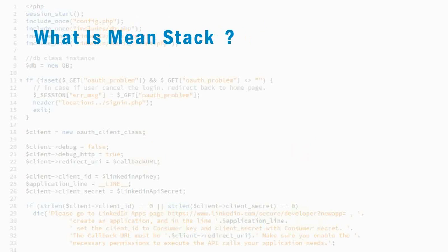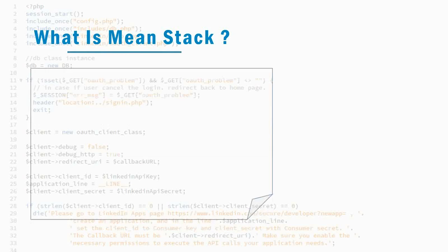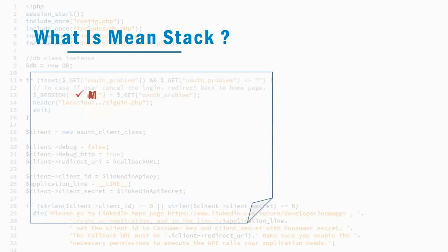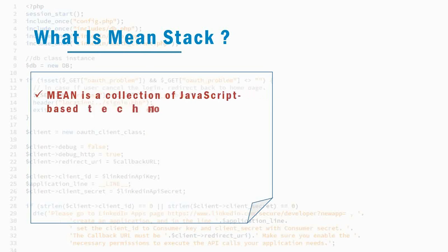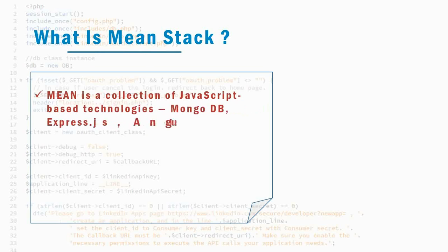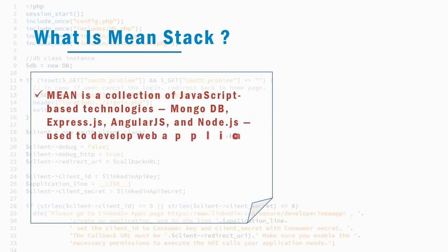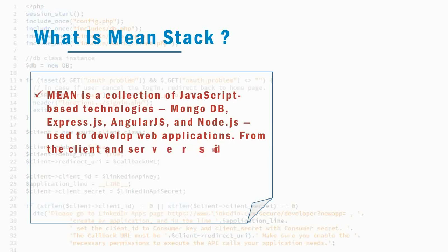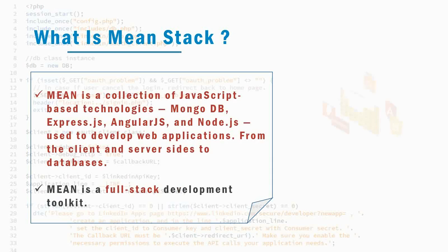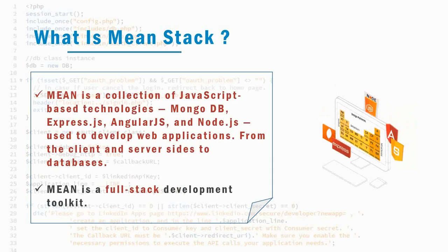What is MEAN stack actually? MEAN is a collection of JavaScript-based technologies — MongoDB, Express.js, Angular.js, and Node.js — used to develop web applications from the client and server sides to the database. MEAN is essentially a full stack development toolkit.